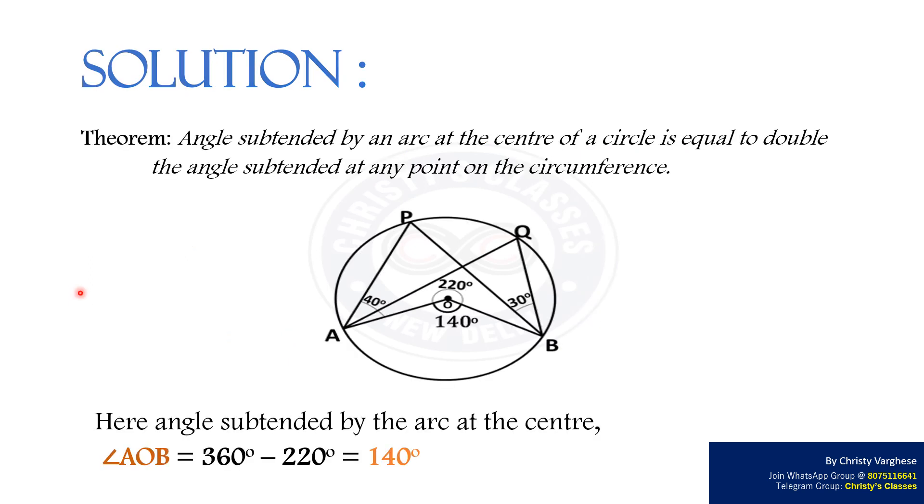Solution. Let us recall a theorem based on the angles in a circle. The angle subtended by an arc at the center of a circle is equal to double the angle subtended at any point on the circumference.